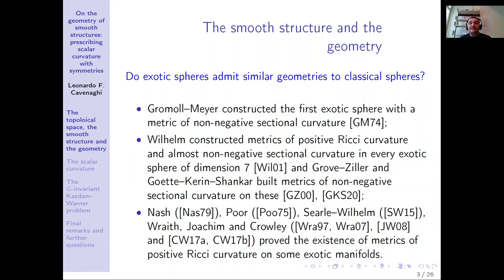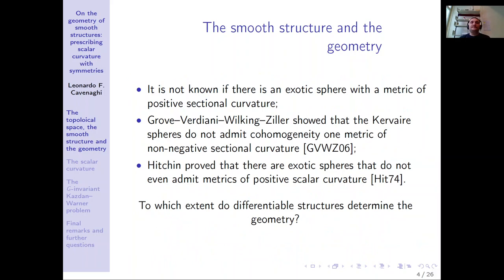Groves-Ziller, and more recently Goette-Kerin-Shankar, built metrics of non-negative sectional curvature on all of these manifolds of dimension seven. Concerning manifolds with positive Ricci curvature, a lot of work has been done. Nash, Poor, Searle, Wilhelm, Wright, Wraith, and Crowley proved the existence of metrics of positive Ricci curvature on several exotic manifolds.